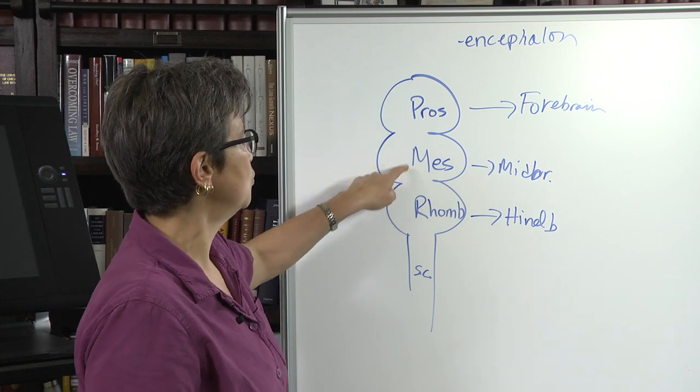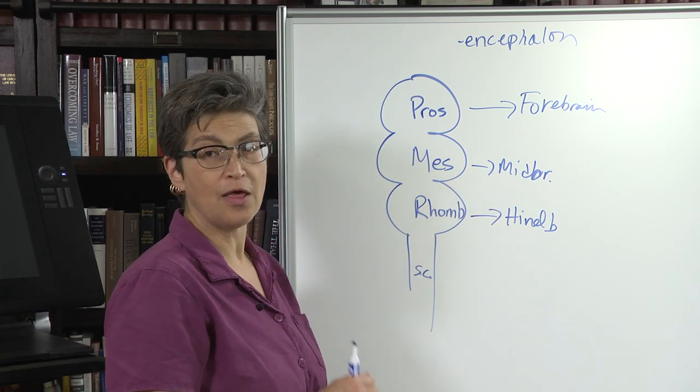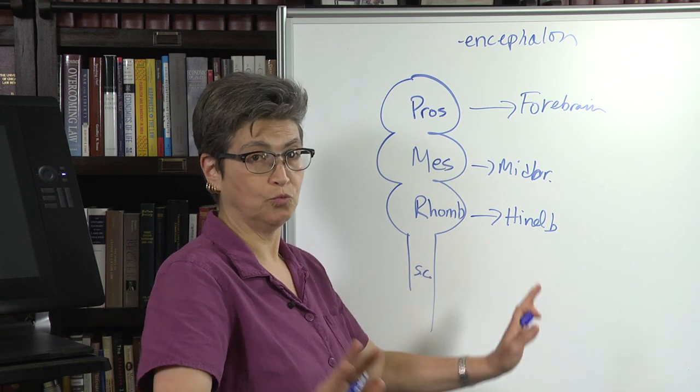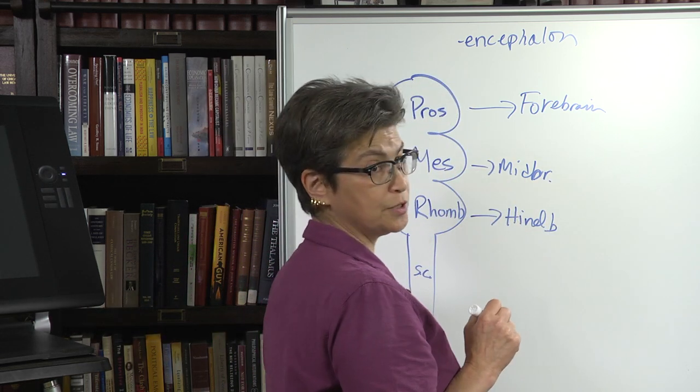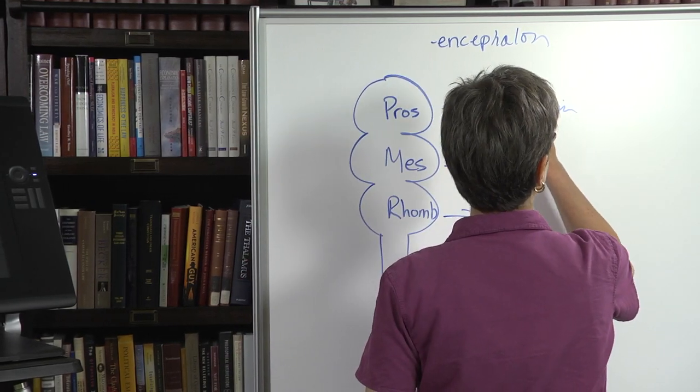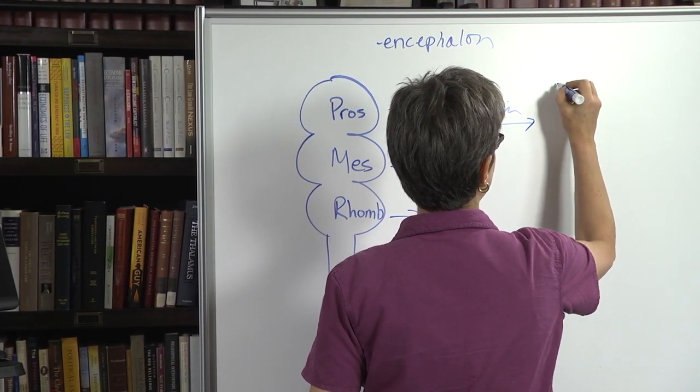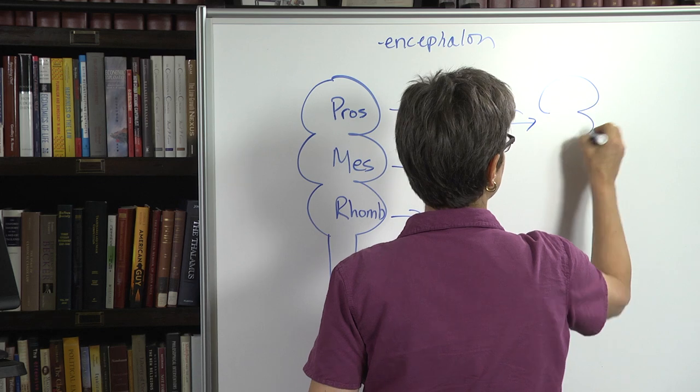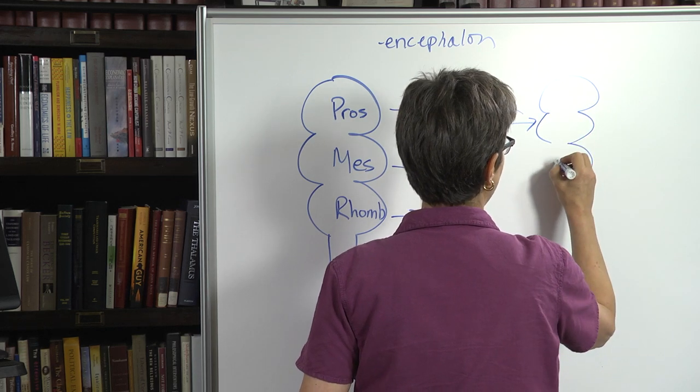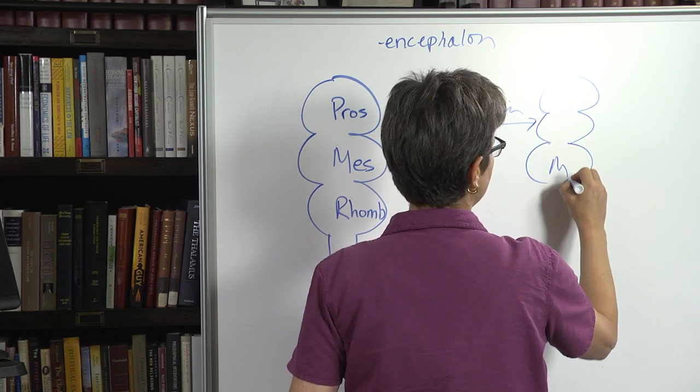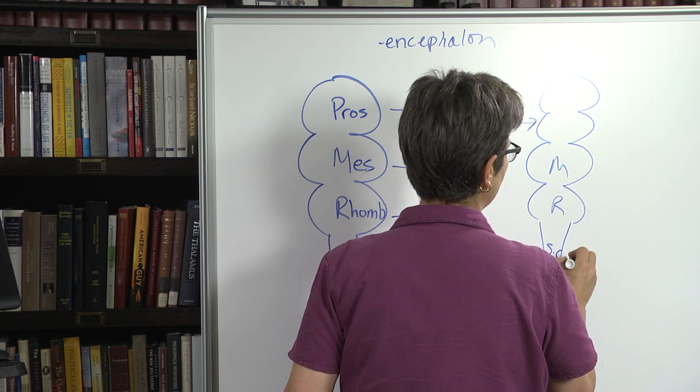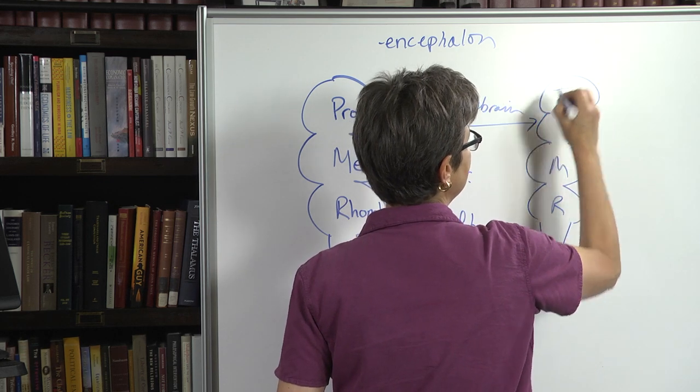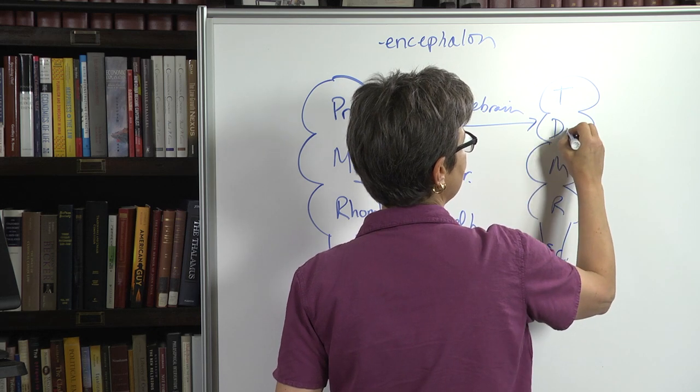These two, the mesencephalon and rhombencephalon—the midbrain and hindbrain—we're done, we're all good. The one that's going to complicate our lives is the prosencephalon, which divides into two vesicles. So now we have mesencephalon, rhombencephalon, spinal cord, and now we have telencephalon and diencephalon.